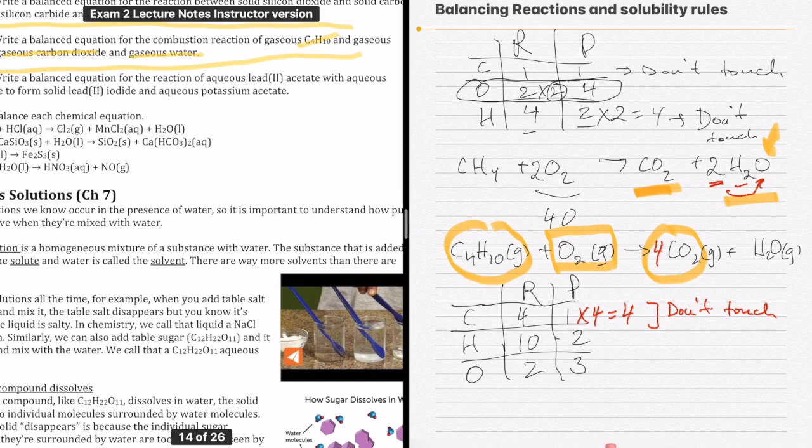We're going to do oxygen last, so right now the only thing we can manipulate is H2O. For hydrogen, I need to put in 5, which gives me 10. If I put 5 in front of H2O, that's 10 hydrogens. That means all the things with hydrogen and carbon are done. All I have left now is oxygen.